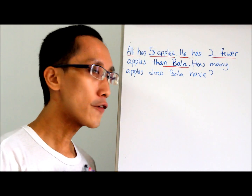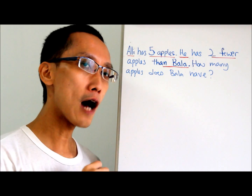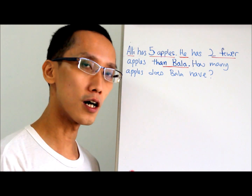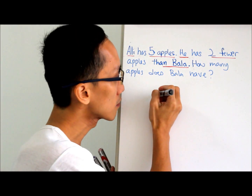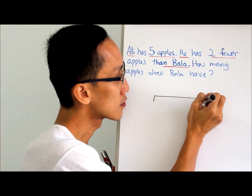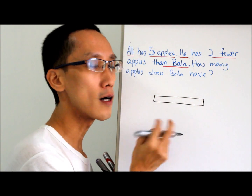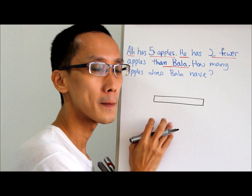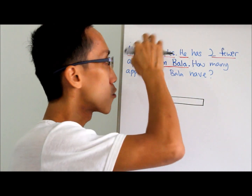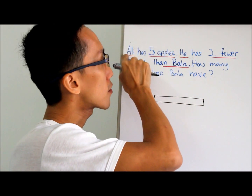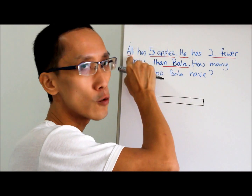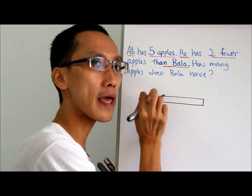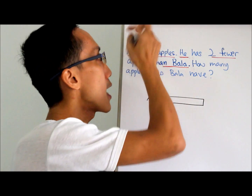Look carefully. If your child does not know how to get started, very simple — just draw a rectangular box, that's all. Then ask him or her: this rectangular box represents who? Scale from the left to the right. So represent who? Ali — so I just write the alphabet A to represent Ali.